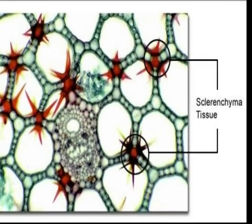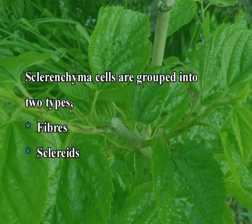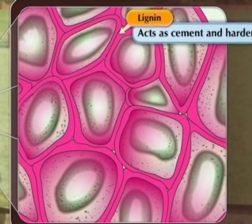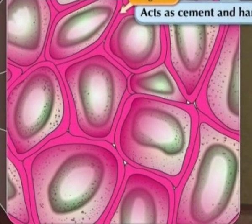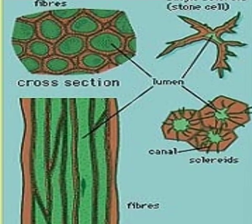Sclerenchyma is often called dead mechanical tissue; they do not possess living protoplasm. Sclerenchyma cells are grouped into two types: fibers and sclerides. Fibers are elongated sclerenchyma cells with pointed ends — dead cells with lignified wall, without living protoplasm, compactly arranged without intercellular spaces, and have pits on their wall. Main functions: provide mechanical strength and support, help in seed dispersal. Sclerides are thick-walled, heavily lignified hard cells whose main function is giving mechanical strength to soft tissues of leaves and some fruits.